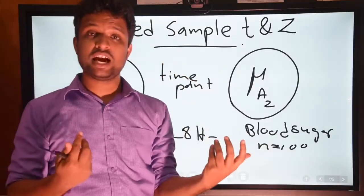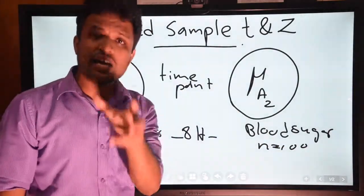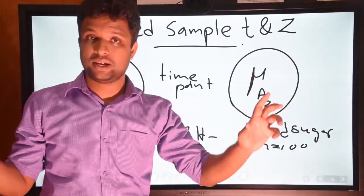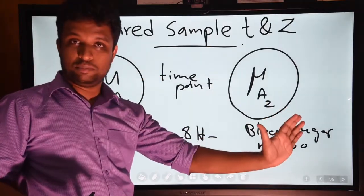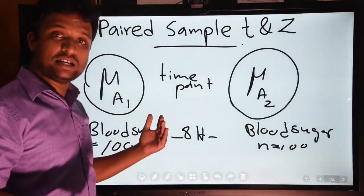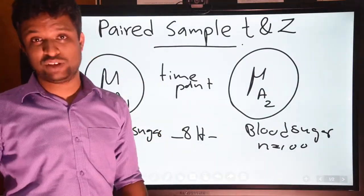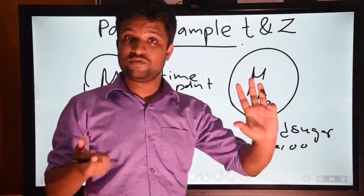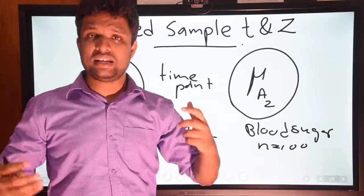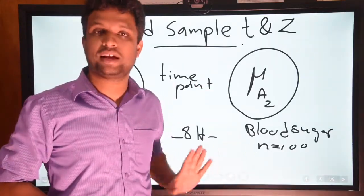In a two-sample case we have two different populations with totally different people, but in a paired design we use the same people at different time points. The advantage is that the probability of having biological variations is less in this paired design, because the same people appear in both measurements. In a two-sample case, one sample might consist of more females and the other more males, creating imbalance, but in a paired test we don't need to balance as much. So the error effect from biological variation is minimal in a paired design.